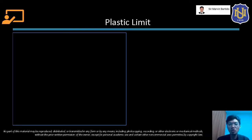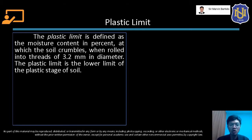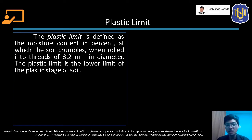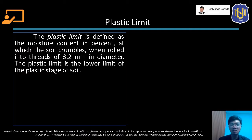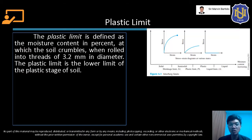We're now going to talk about the plastic limit of soil. The plastic limit is defined as the moisture content in percent at which the soil crumbles when rolled into threads of 3.2 mm in diameter. The plastic limit is the lower limit of the plastic stage of soil.